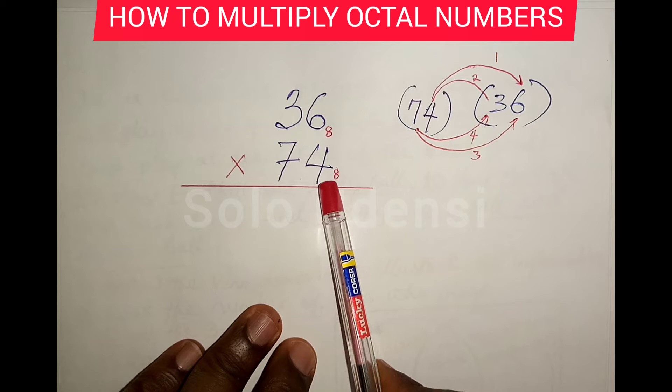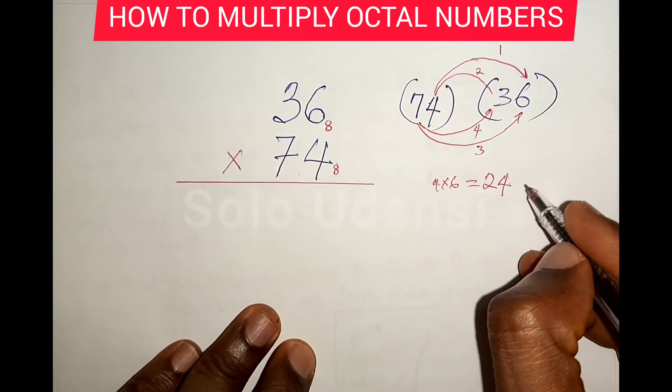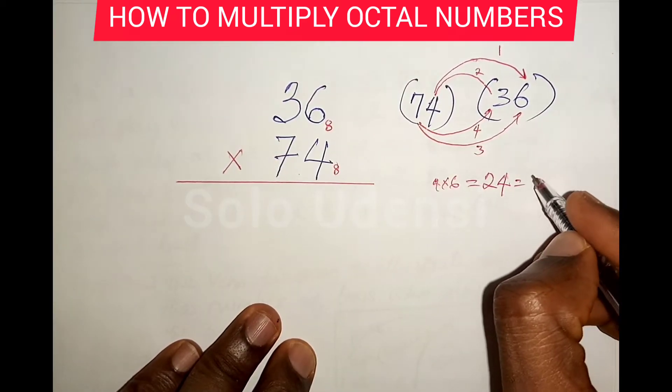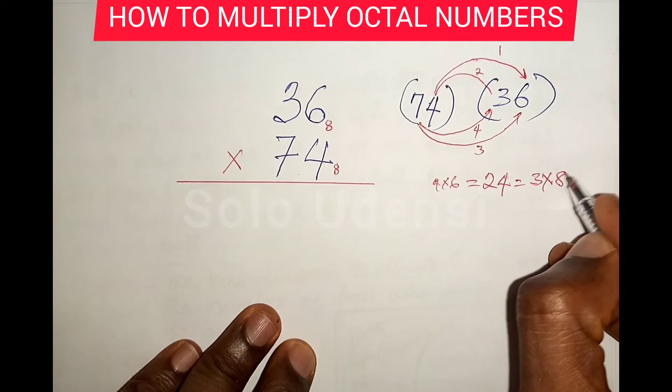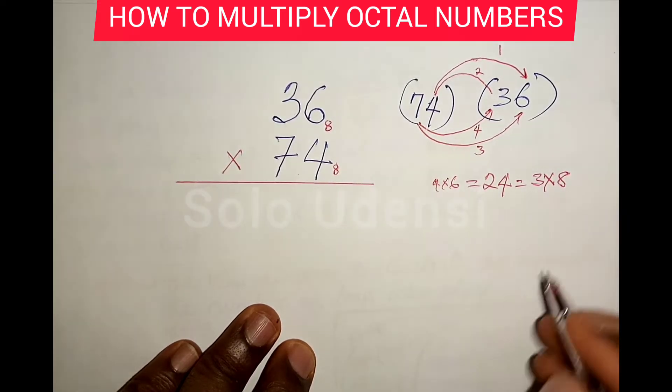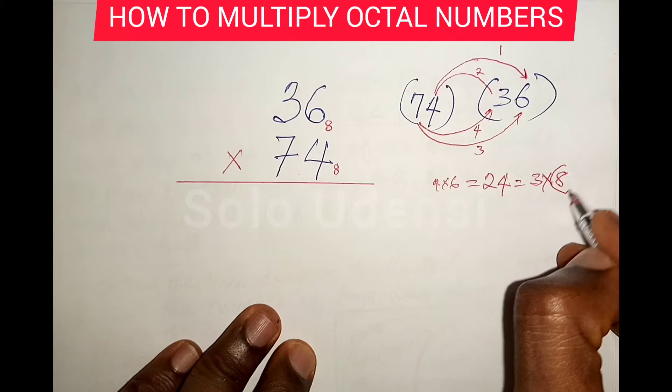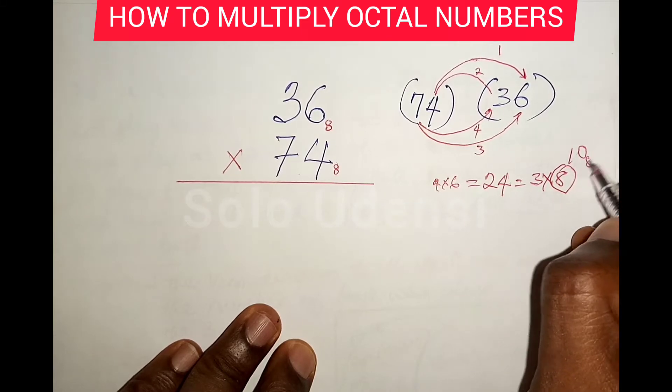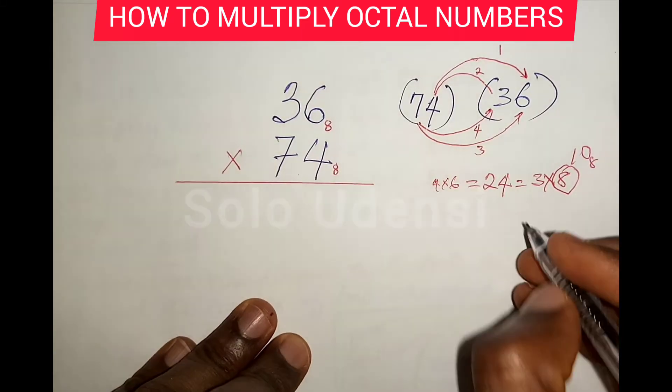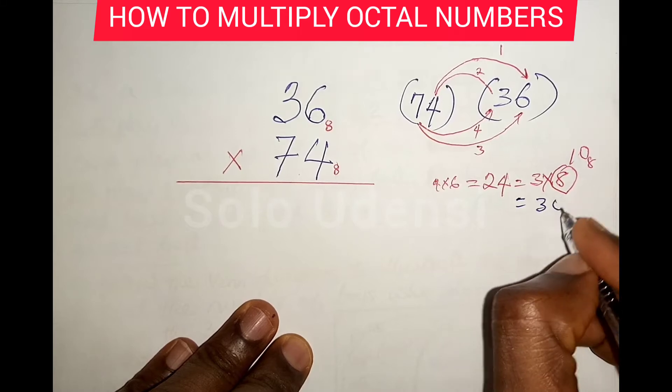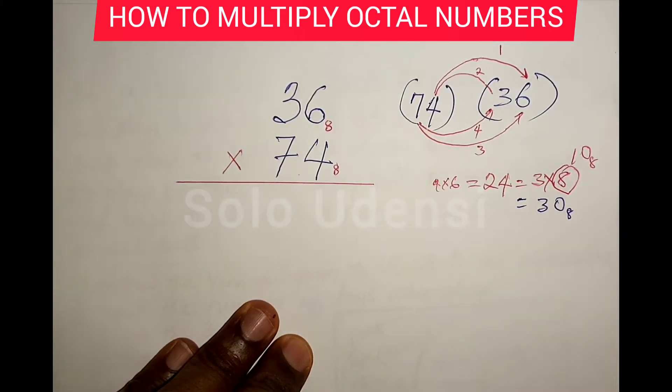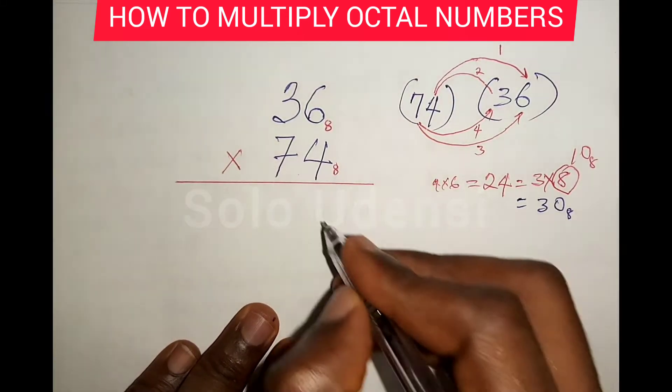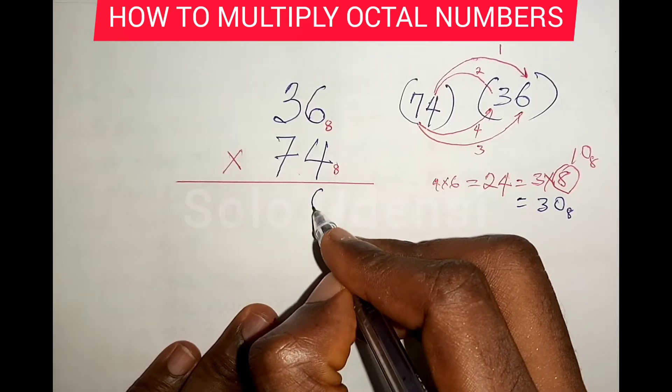Six times four is 24. And 24 means three times eight. And eight we have found out is one zero in base eight. So it means three zeros in base eight. So we write zero and carry three.